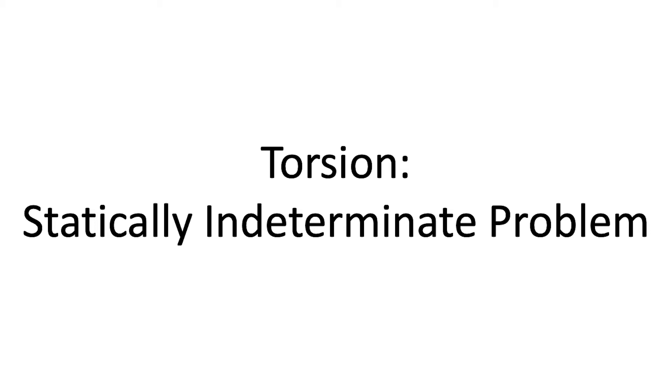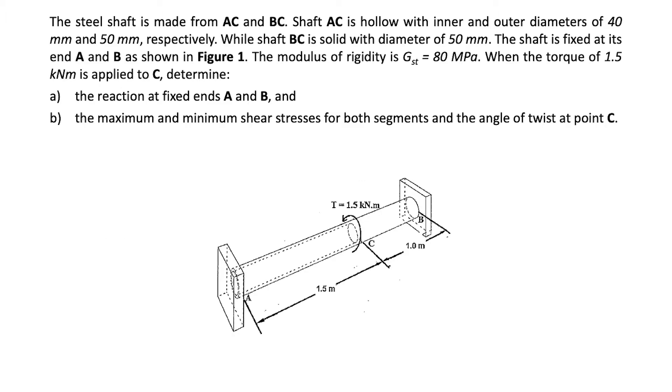Hi guys, welcome back to my online class. This session we will solve a problem regarding a statically indeterminate structure when subjected to torsion. The question is: the steel shaft is made from AC and BC. Shaft AC is hollow with inner and outer diameters of 40 millimeters and 50 millimeters respectively.